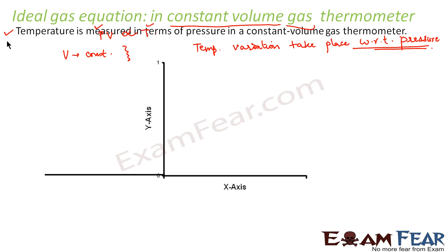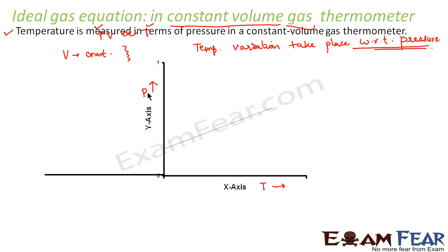If we plot a graph with temperature along the x-axis and pressure along the y-axis, we get a straight line. That means temperature increases linearly with increase in pressure.